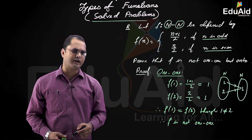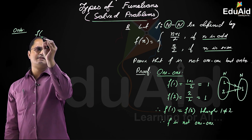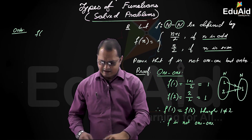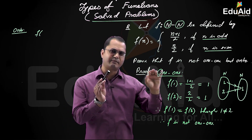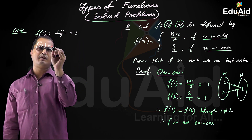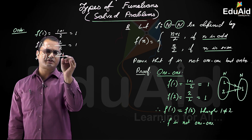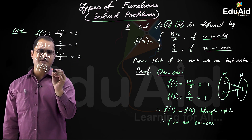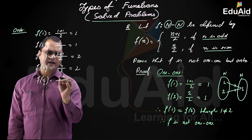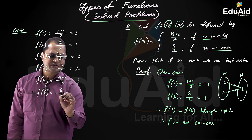Now I am going to show this function is onto. Let me list the images: f(1) equals 1, f(2) equals 1, f(3) equals (3 plus 1)/2 equals 2, f(4) equals 4/2 equals 2, f(5) equals (5 plus 1)/2 equals 3, f(6) equals 6/2 equals 3. The range of f consists of all images: 1, 2, 3, and so on.